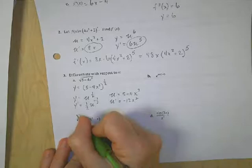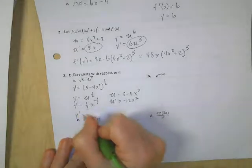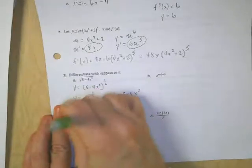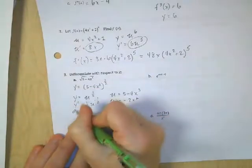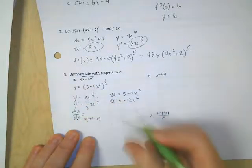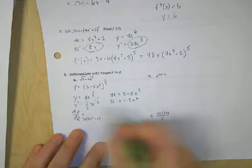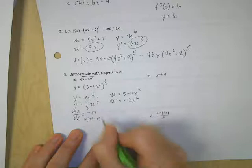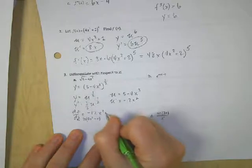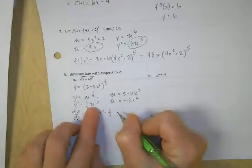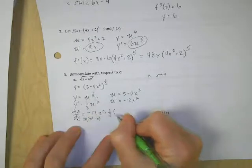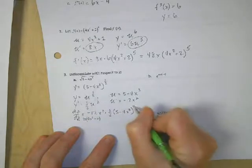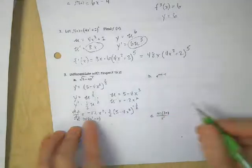So I get y prime in terms of x, or another way of saying that is dy dx. I'm going to multiply these together. I'm going to go ahead and put this one first. So negative 12x squared times 1 half u to the negative 1 half. My u is 5 minus 4x cubed to the negative 1 half. And now I can clean this all up a little bit.